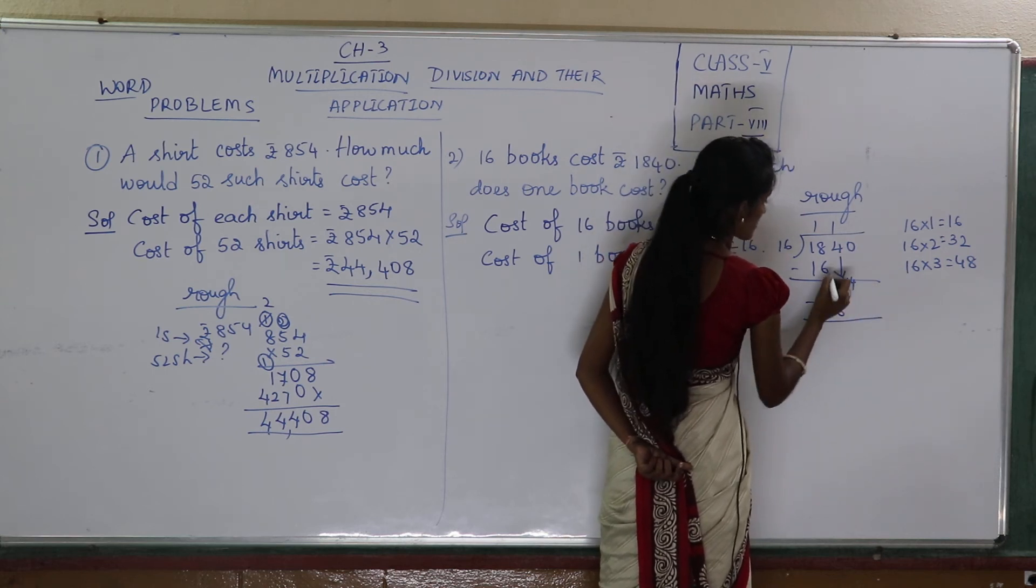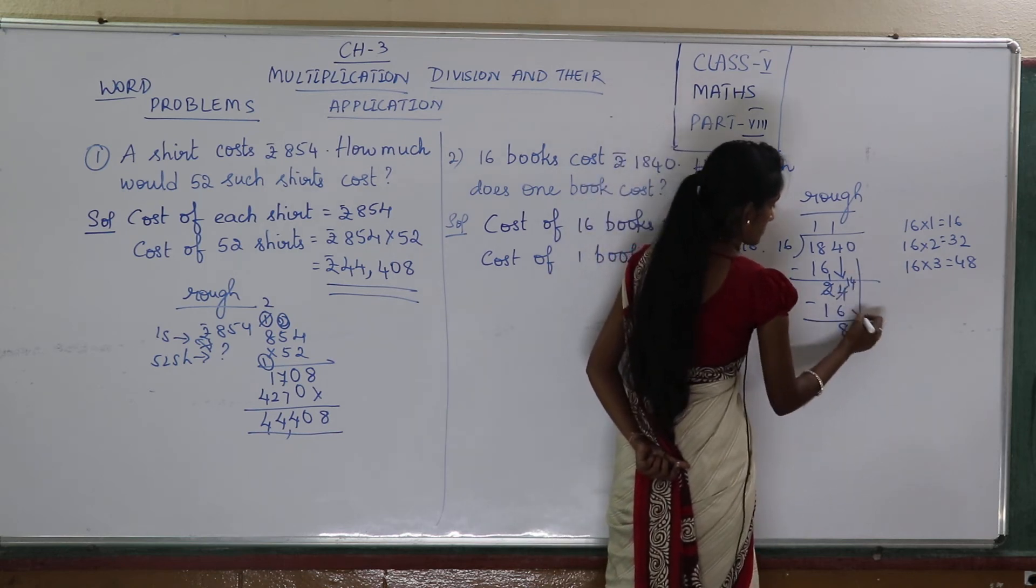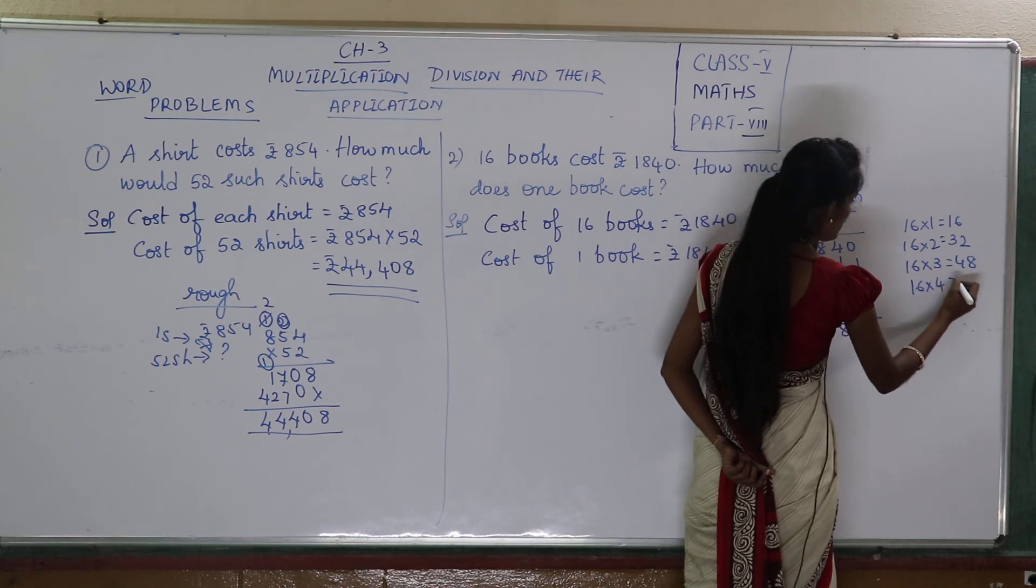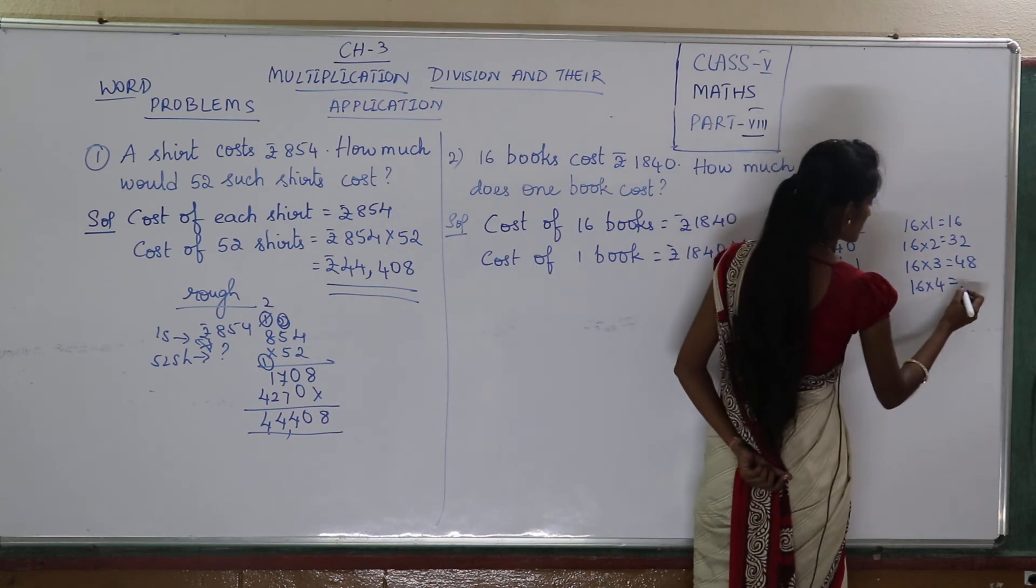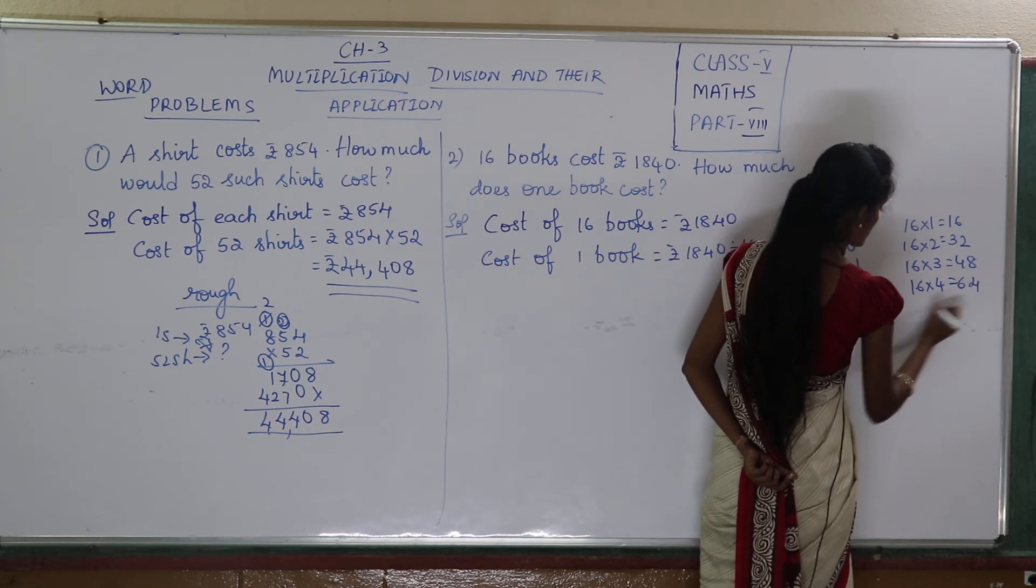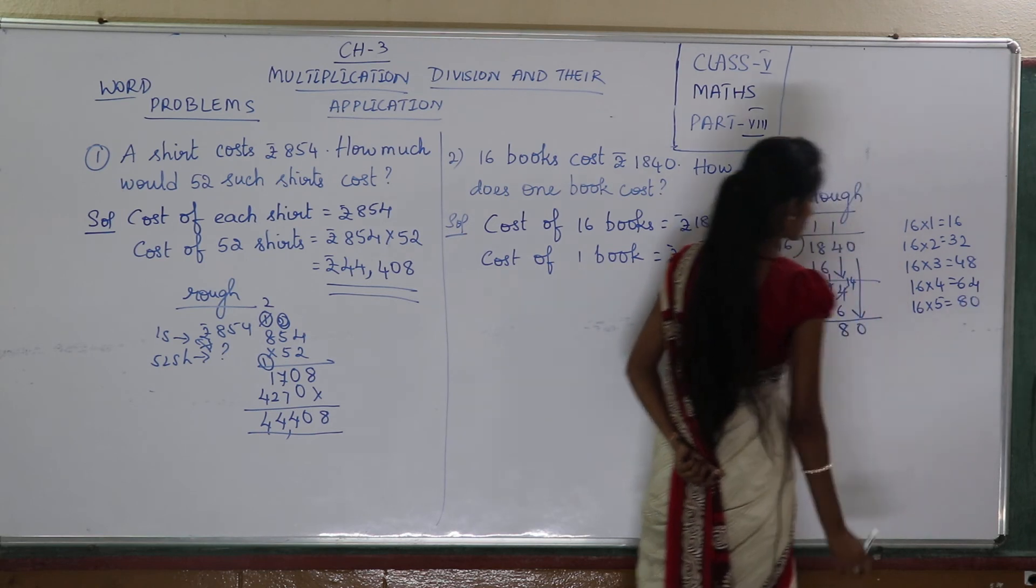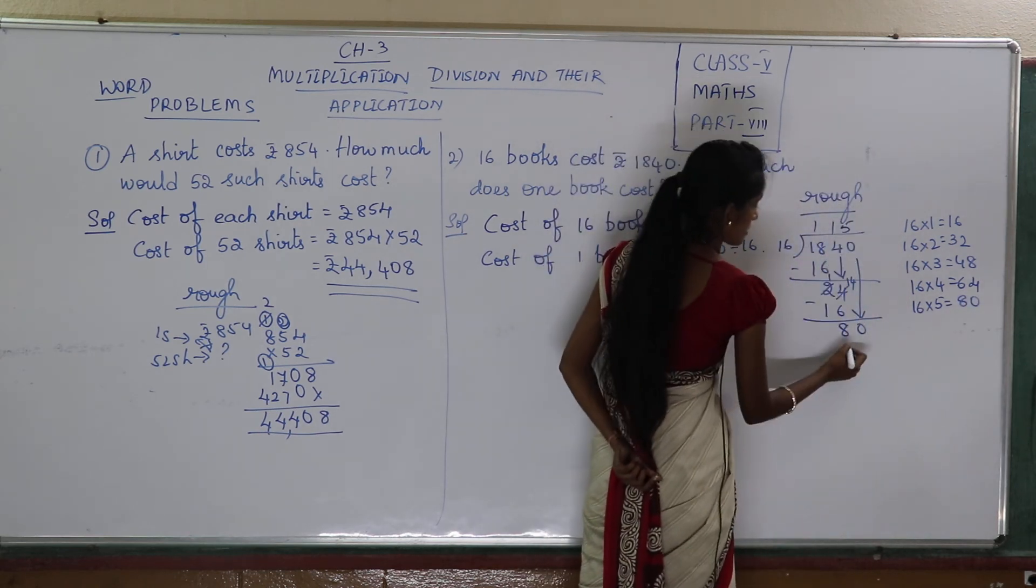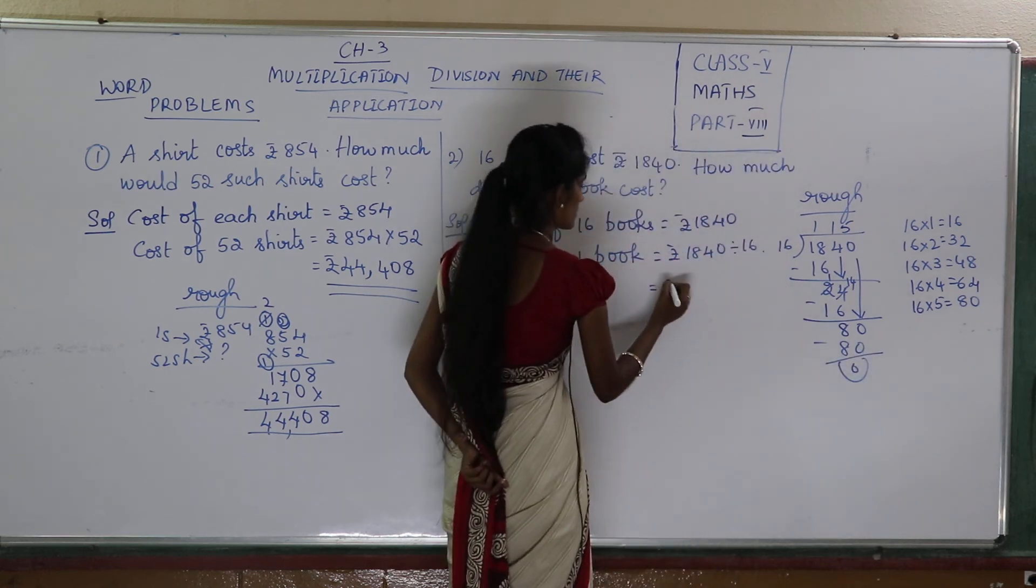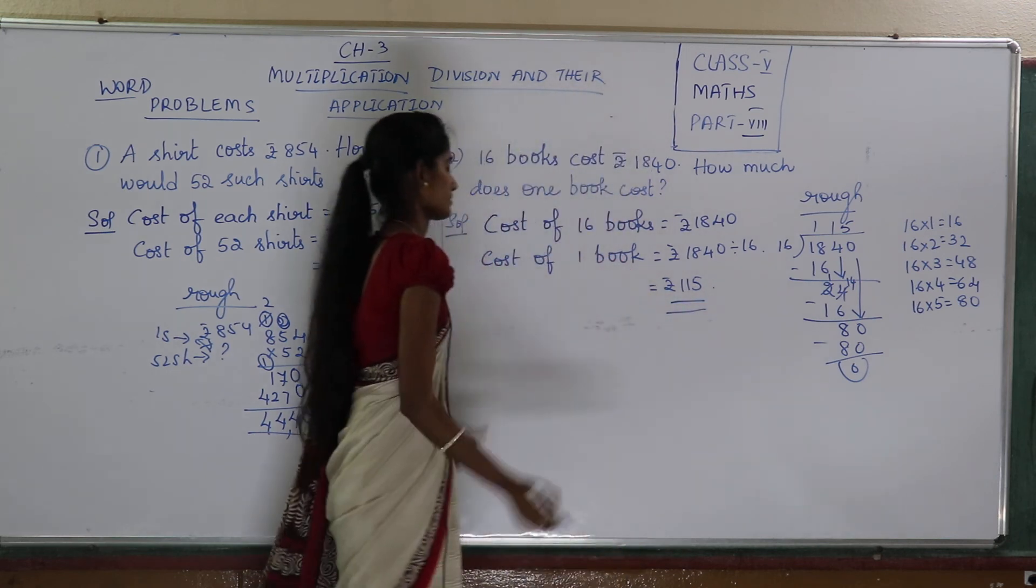16 once is 16. This is 14. Bring down 0 to make 24. 24 minus 16 gives 8. So let us complete our table. 16 times 5 is 80. So what is the cost of each book? 115.